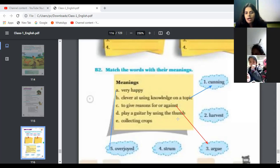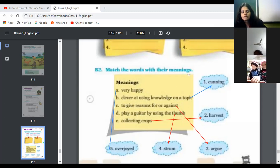Fourth one. Play a guitar by using thumb, strum. Match with four. Last one, collecting crops, harvest. Match with second.